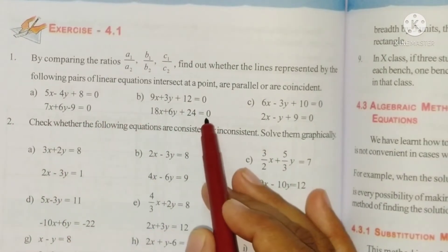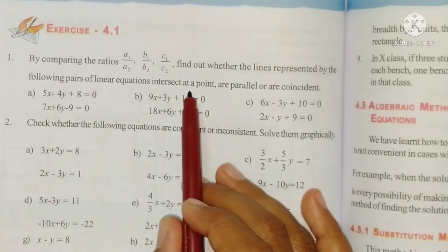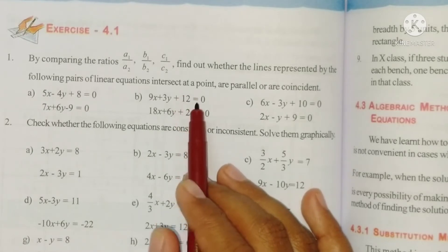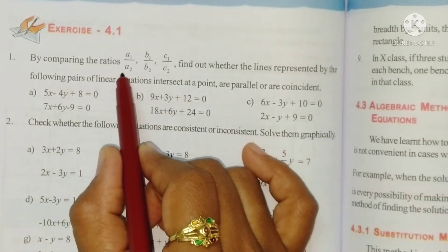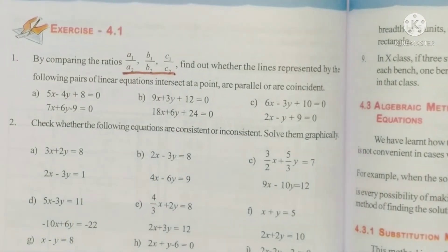So here lines are given. Now we have to tell whether these lines are intersecting, parallel, or coincident based on these ratios.